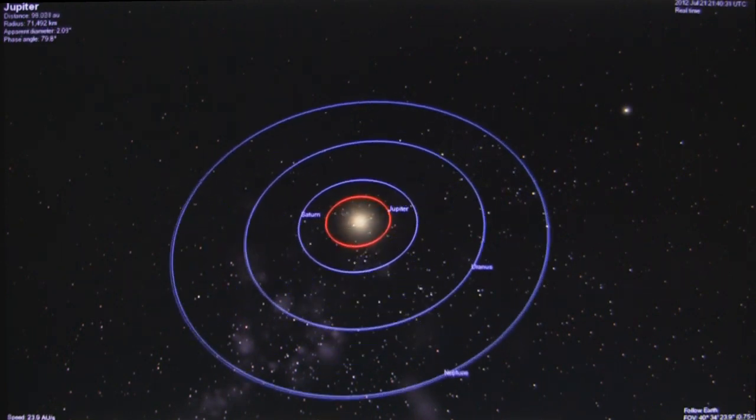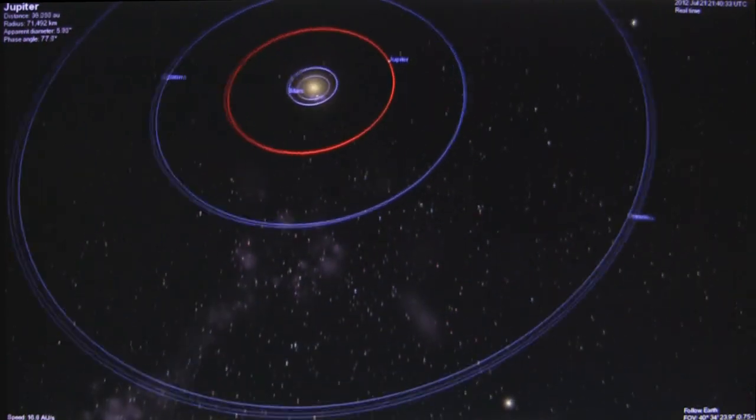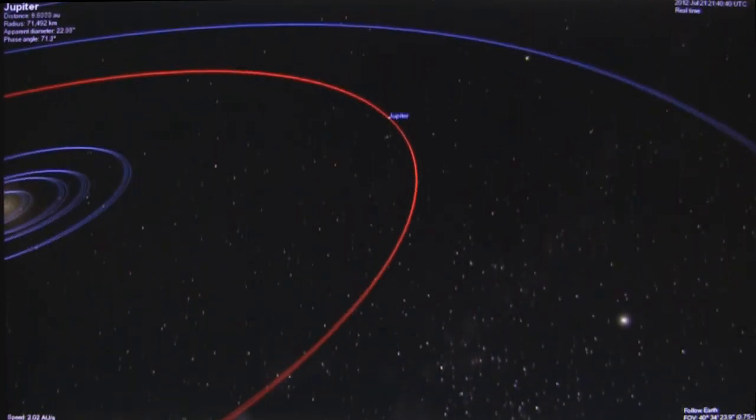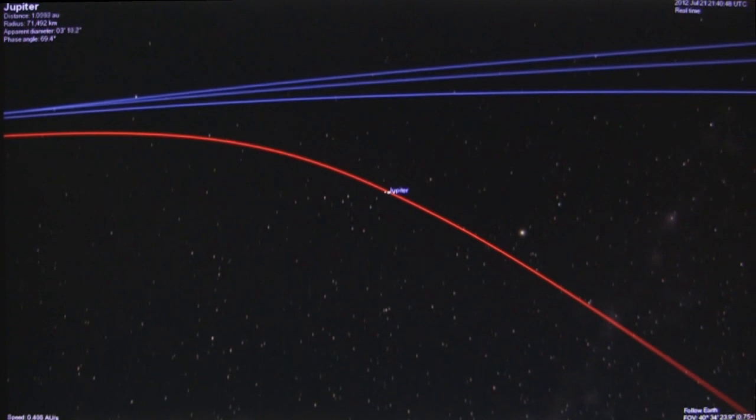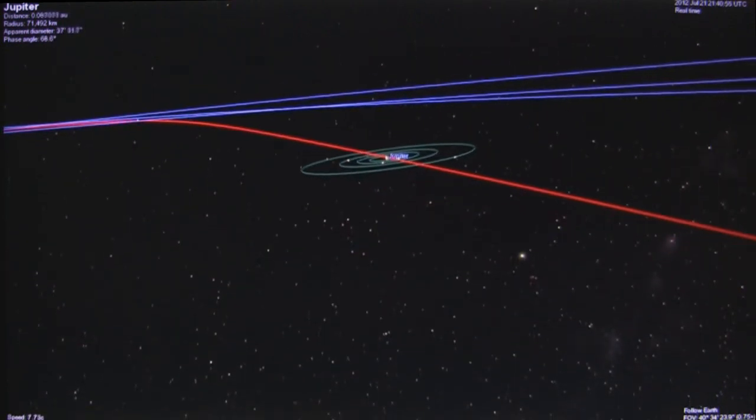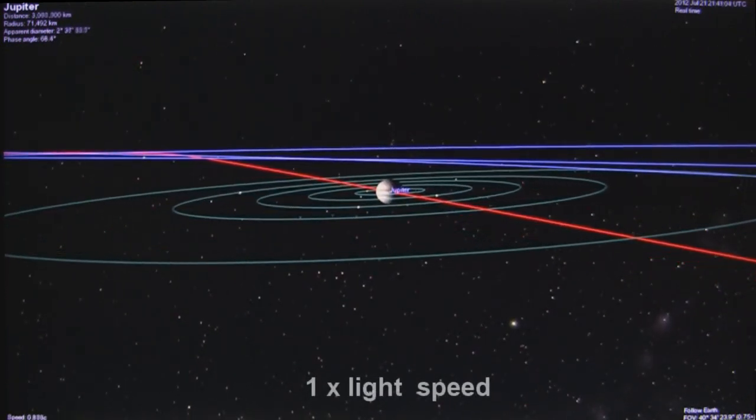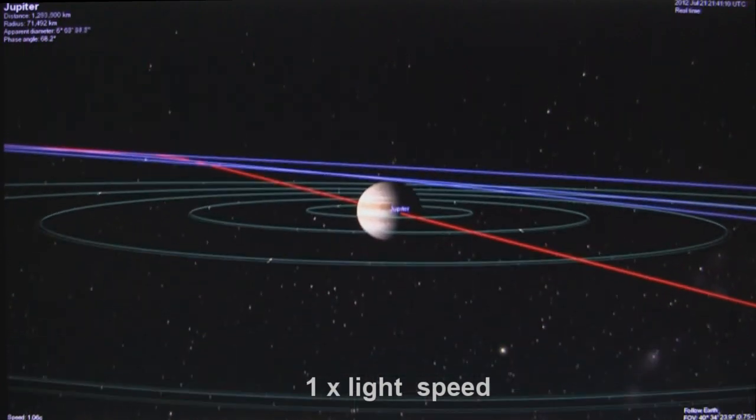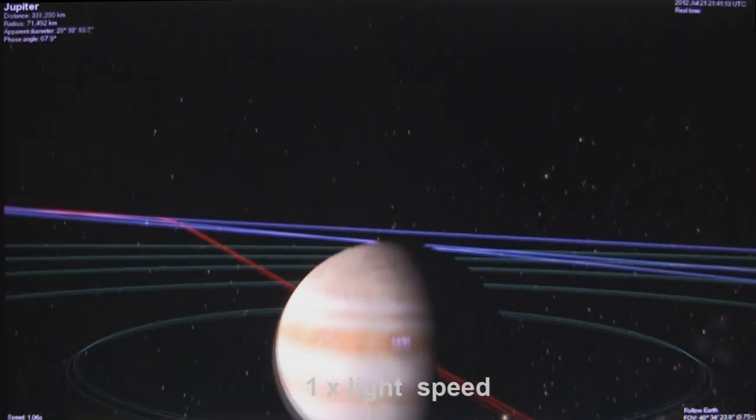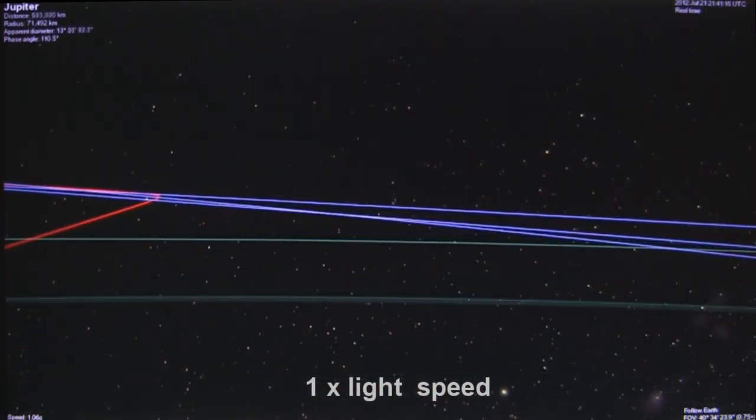So let's slow this down for a light speed flyby of the largest planet, Jupiter. Just for perspective. So it takes a few seconds to fly across the Jovian system at light speed. Yep, that's it. That's the biggest planet in the solar system, at light speed.